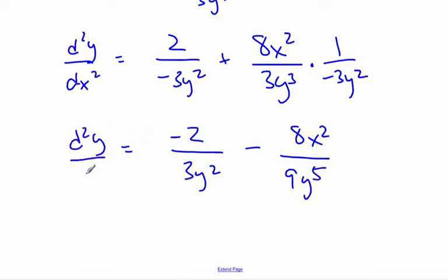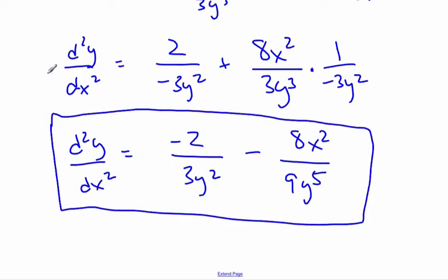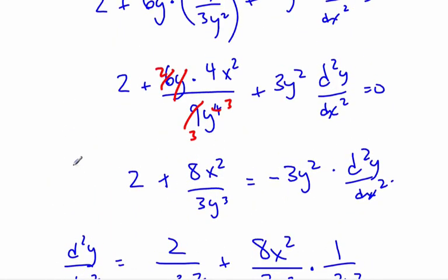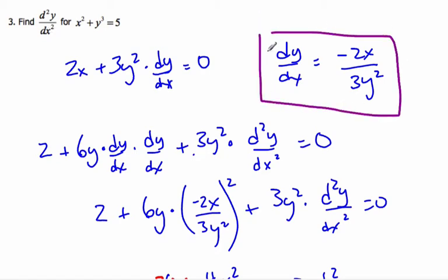That is the second derivative. To recap: take the first derivative, solve for it, then take the derivative again. Alternatively, we could have differentiated the expression for dy/dx directly using the quotient rule and ended up with the same result. There are two different ways to do it.